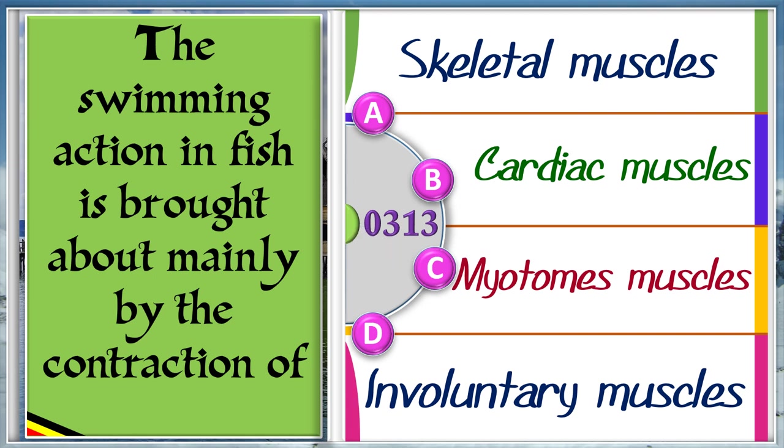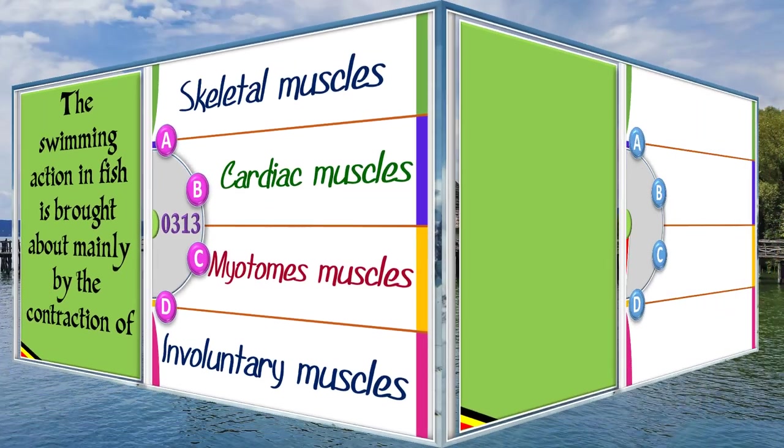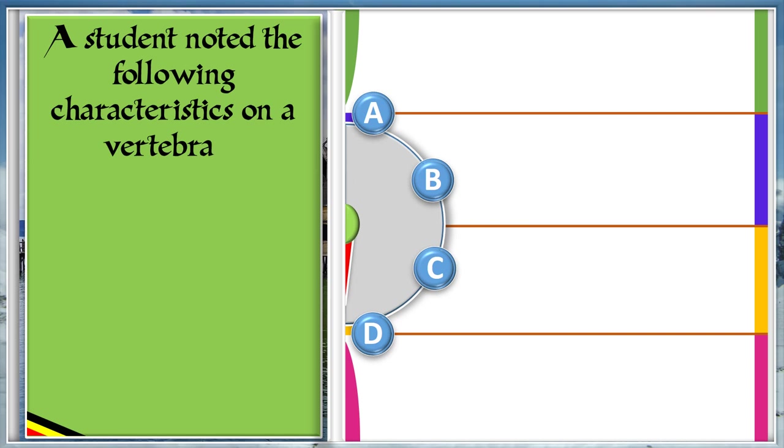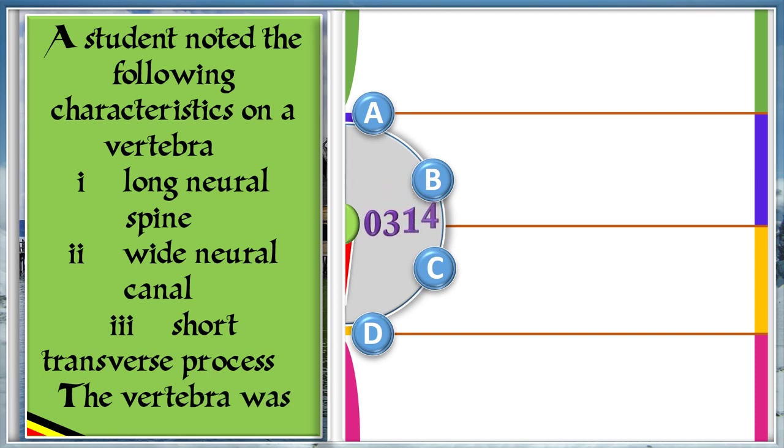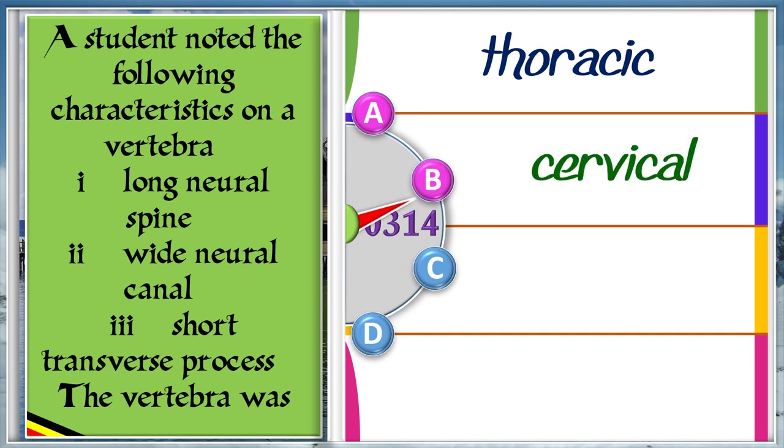A student noted the following characteristics on a vertebra: 1. Long neurospine. 2. Wide neurocanal. 3. Short transverse process. The vertebrae was A: Thoracic. B: Cervical. C: Lumbar. D: Atlas. And the answer is A, thoracic.